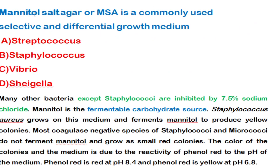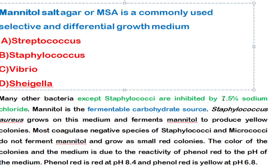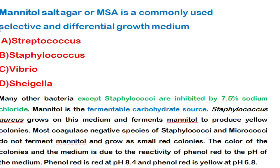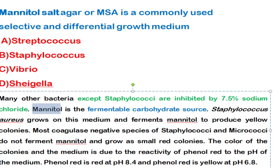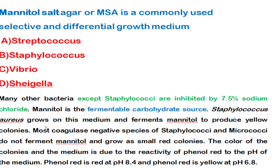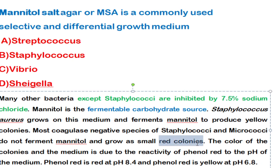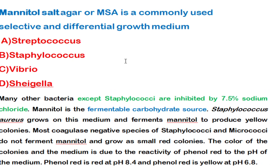The next question: Mannitol Salt Agar is commonly used as a selective and differential medium for isolating which organism? The answer is Staphylococcus, because only Staphylococcus can grow in the presence of 7.5% NaCl present in this agar while other organisms are inhibited. Staphylococcus aureus ferments mannitol to produce yellow color colonies, whereas coagulase-negative staphylococci cannot ferment mannitol and produce red color colonies. The medium contains phenol red as a color indicator.